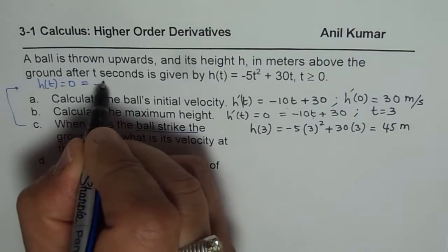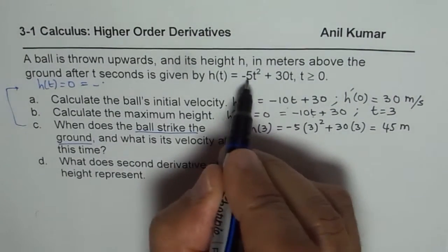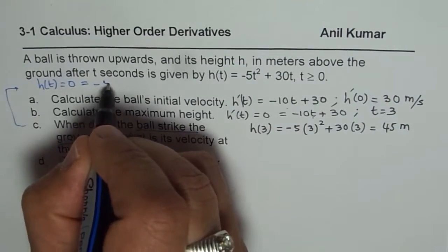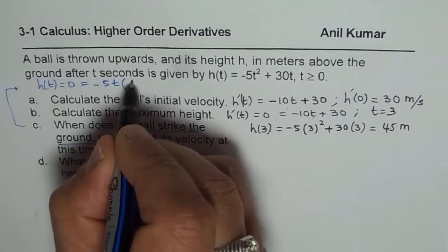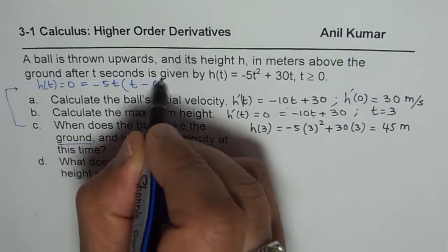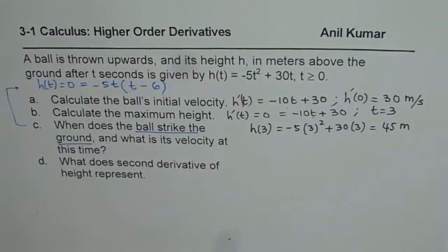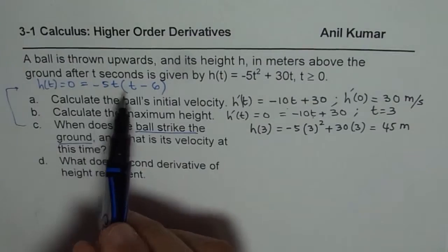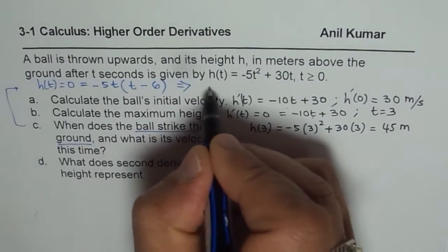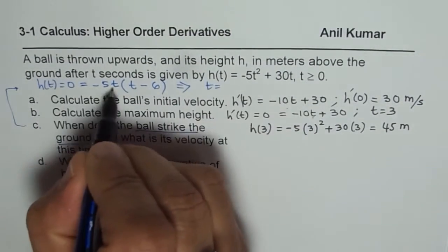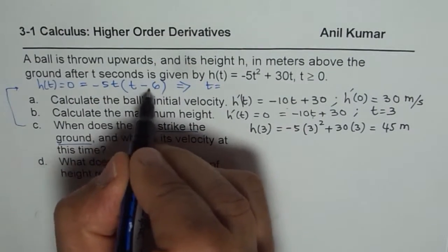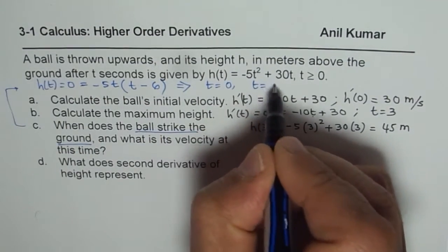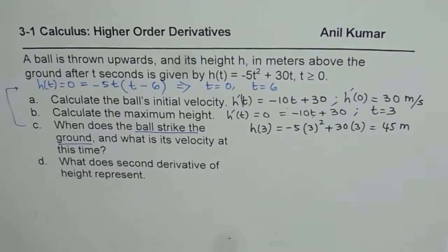So 0 equals to minus, so we will factor this. So let me factor this, I will write -5t and then we are left with t - 6. So in factored form, that is the equation. It gives you 0. So that gives you that at t equals to, we know at 0 you start it off and at 6. So t = 0 and t = 6 are two different solutions.